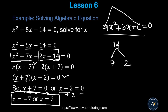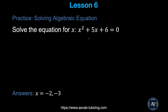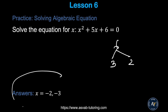Here's another quadratic practice problem. Split the middle term using 3 and 2, since 3 × 2 = 6 and 3 + 2 = 5. Solve and make sure you get x = −2 and x = −3.